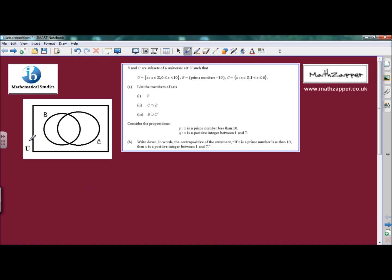So the first thing we should do is draw a Venn diagram to show this information. If you go to set C, we know that the first number that we can have in set C is 2 because we can't have 1, and they're all integers, so it's going to be 2, 3, 4, 5 and 6.